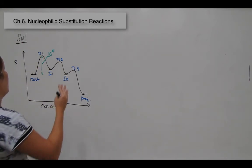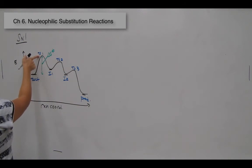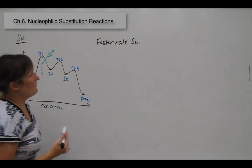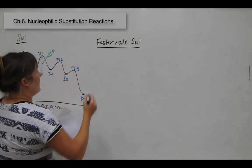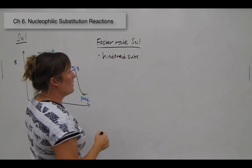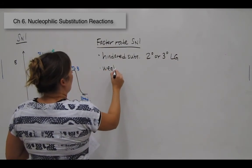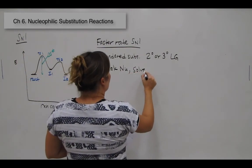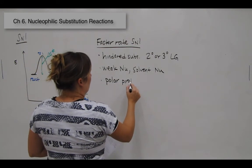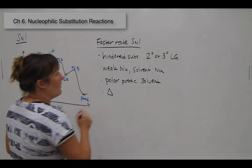To increase the rate of an SN1 reaction, we want a hindered substrate — secondary or tertiary leaving group. We want a weak nucleophile, or the solvent itself as nucleophile. We want a polar protic solvent, meaning one that has an OH or NH. And we often apply heat to these reactions.